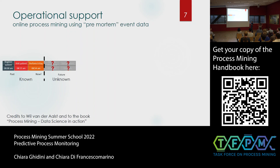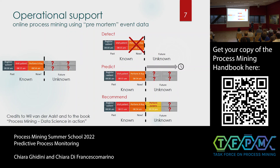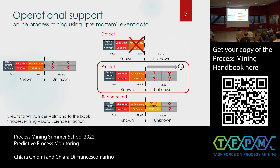What can we do with this ongoing execution? We can detect if something went wrong — if the x-ray being performed now is something that shouldn't happen. We can predict what will happen to John in the future, and we can also recommend something to achieve a certain goal. These are the three activities in the big picture of process mining's operational support, which deals with pre-mortem data. Today we focus mainly on the prediction part and will see something about recommendation.